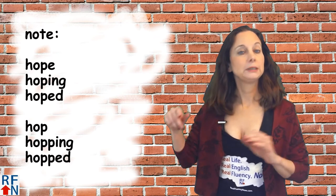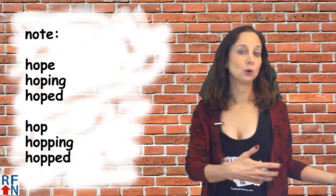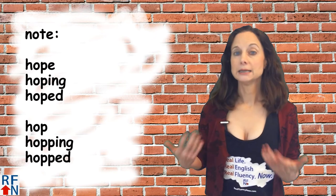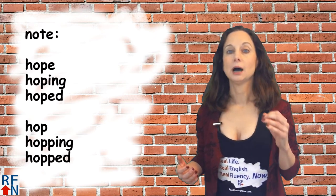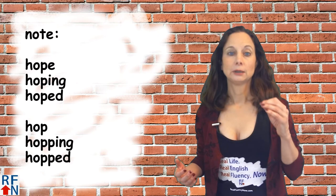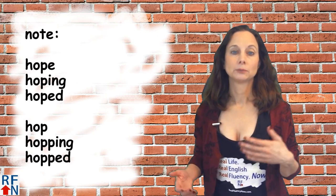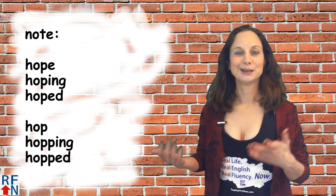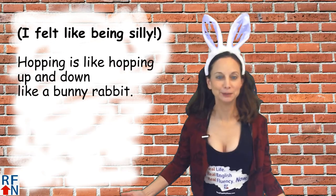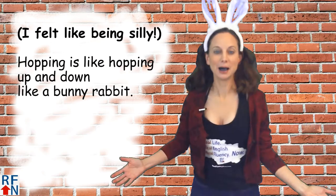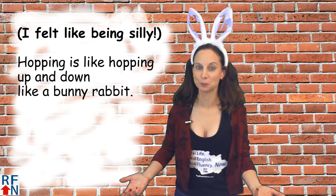The past tense of hope is spelled h-o-p-e-d, or you can say 'had hoped' for something. Be careful not to confuse it with 'hopped,' spelled h-o-p-p-e-d with two p's — that comes from the verb 'hop,' h-o-p. Hopping is like hopping up and down like a bunny rabbit. It's different from hope or hoping — you don't want to confuse those.